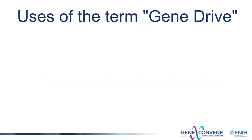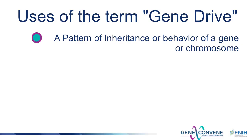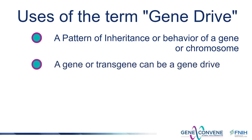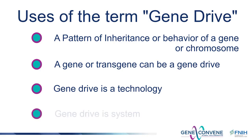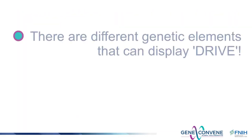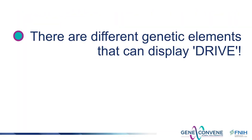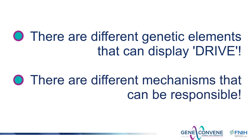Let's conclude by considering some other uses of the term gene drive. I've used the term to describe a pattern of inheritance, or a behavior of a gene or a chromosome. The use of the term drive in this way by geneticists dates back to at least the 1950s. But some use the term gene drive to refer to the thing that displays this biased pattern of inheritance — the gene or genes that are unfairly transmitted to the next generation. Some refer to gene drive as a technology; some refer to gene drive as a system. These uses are understandable, but let me emphasize: gene drive does not refer to one thing, one technology, or one system. There are different genetic elements that can display drive and there are different mechanisms that are responsible.